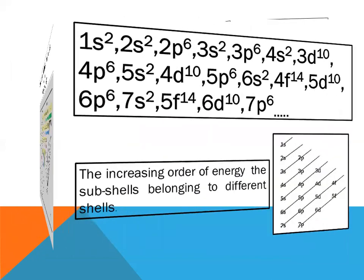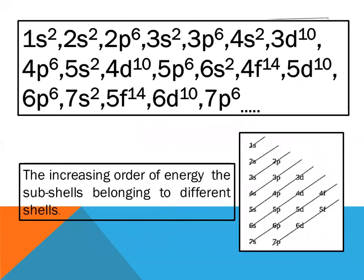The increasing order of energy of the sub-shells belonging to different shells: The electron will be filled first in 1s², then 2s², then 2p⁶, 3s², 3p⁶, then 4s², then 3d. 3d will be placed after 4s.